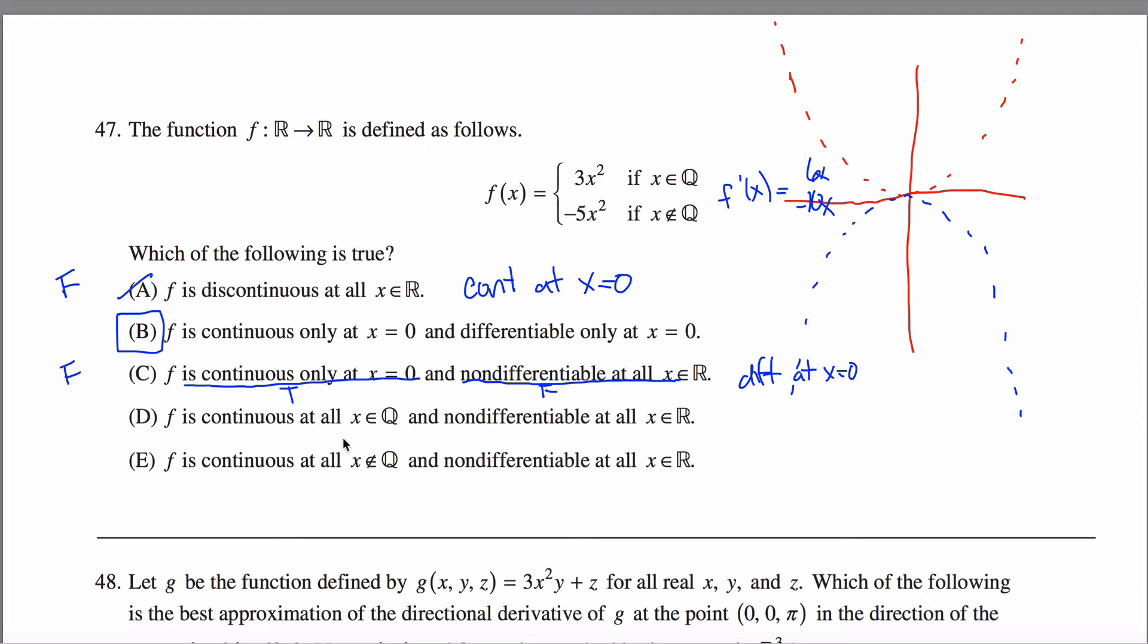f is continuous at any rational number - no, that's absolutely false. In fact, it's discontinuous at every rational number except for 0. But like the rational number 5, for example, it's certainly discontinuous there because a tiny bit to the right of 5 and a tiny bit to the left of 5, I jump way the hell down here. That's a false statement. Maybe I'll keep track of these - that's false.